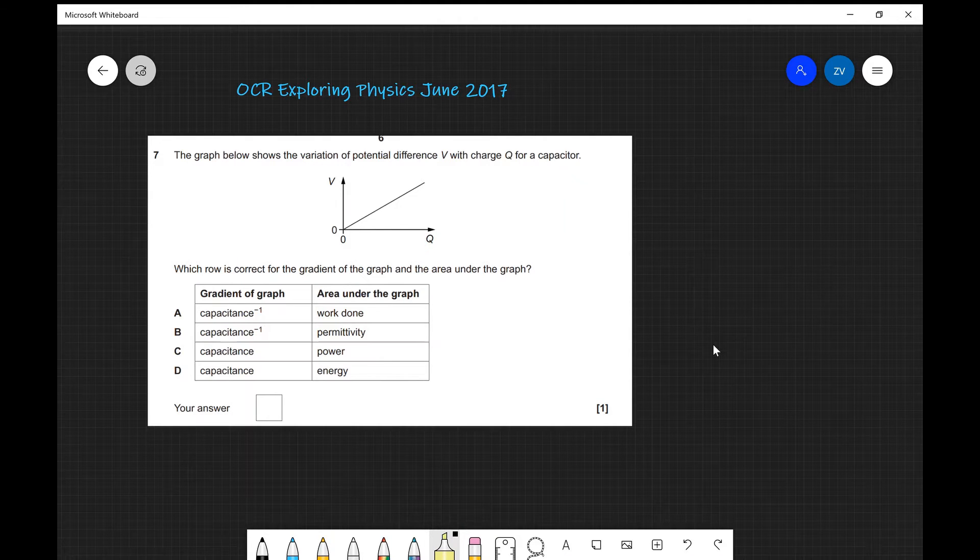Guys, so let's have a look at our first past paper question. The graph below shows the variation of potential difference V with the charge Q of a capacitor. Which row is correct for the gradient of the graph and the area underneath the graph? And this will be a perfect opportunity for you guys to pause this video and attempt this question.